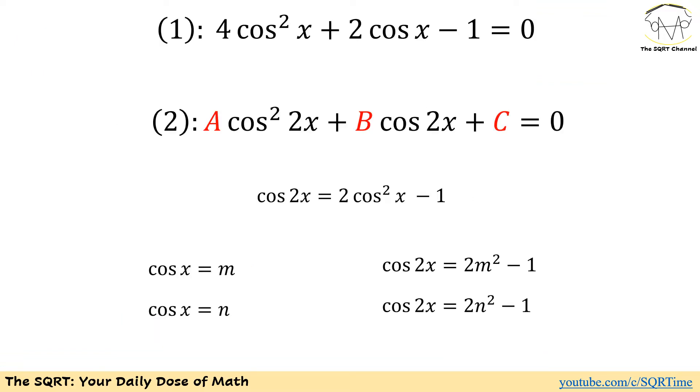Based on M and N we can find X values that are going to satisfy equation number one. Now we want to have the same X values for equation number two. Obviously cosine of 2X can be calculated based on X values that we're going to have. We're going to use M and N here. And we know that cosine 2X can be written as 2 times cosine squared of X minus 1. So if M and N are roots, then cosine of 2X can be written as 2 times M squared minus 1 and 2 times N squared minus 1.